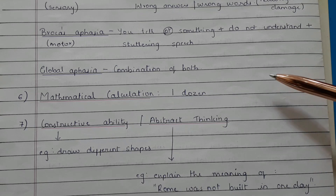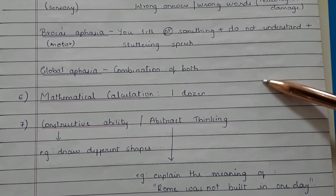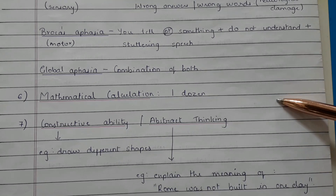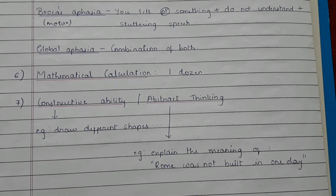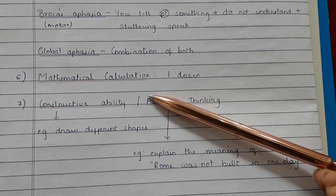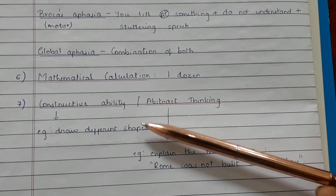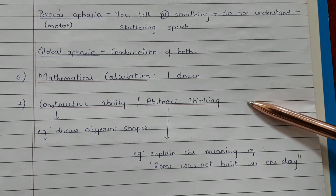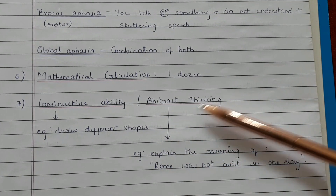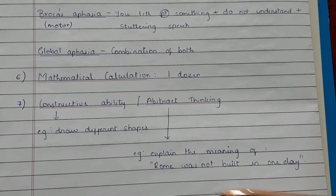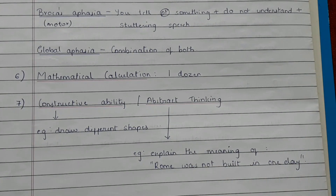The sixth higher mental function is mathematical calculation — ask the patient how much is one dozen. The seventh is constructive ability and abstract thinking. For constructive ability, ask the patient to draw different shapes. For abstract thinking, ask the patient to explain the meaning of a proverb, for example: 'Rome was not built in one day.'